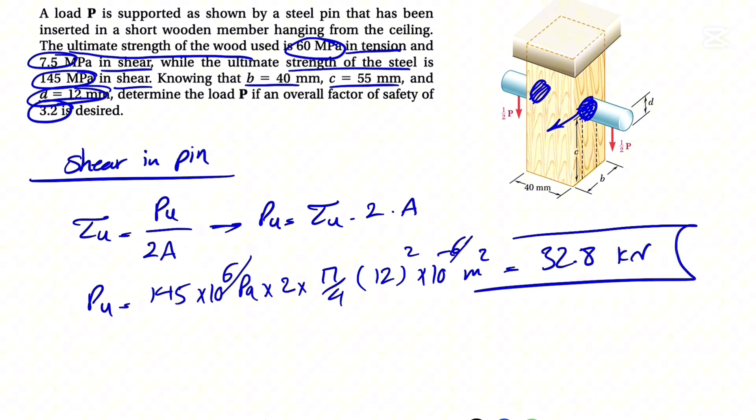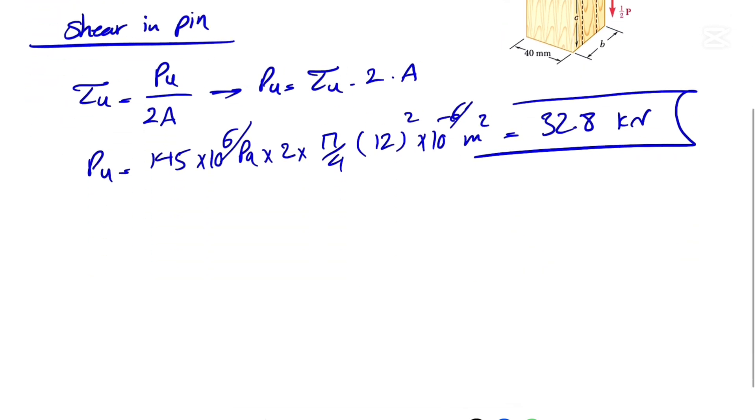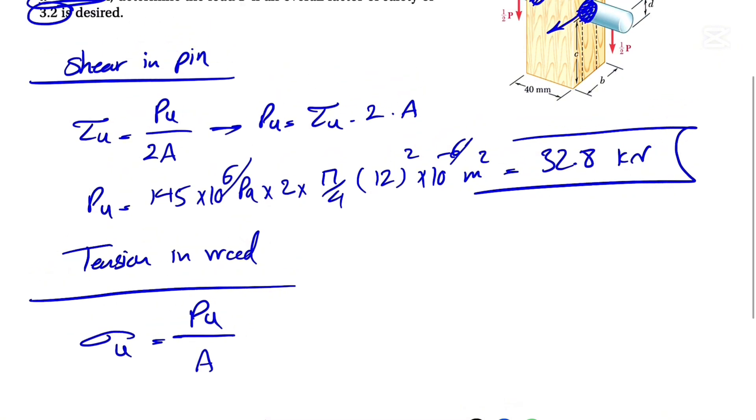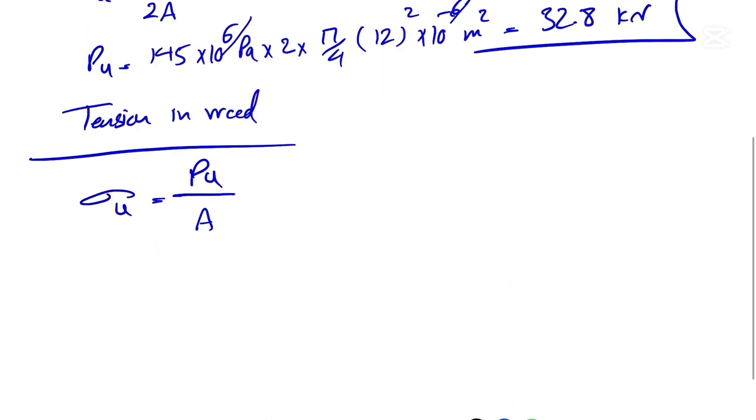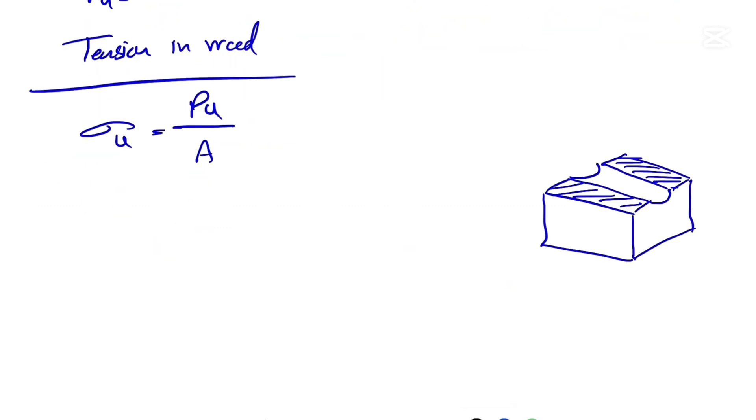Now let's go with the tension in wood. We have ultimate tension equals ultimate force P over the area. We have to watch for these areas because that's the tricky part of this question. Since the wood is in tension, the failure is going to happen where the pin is located, so we're talking about this surface here, and obviously we have this hole in here.